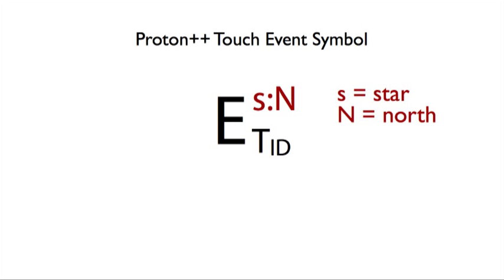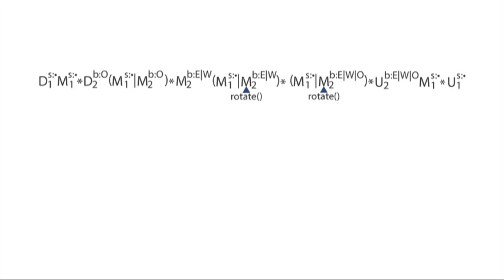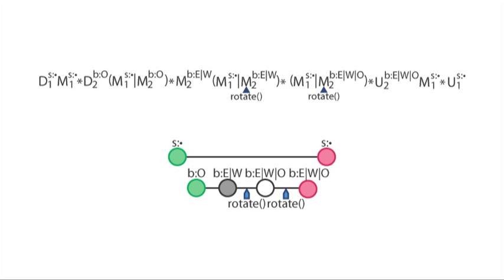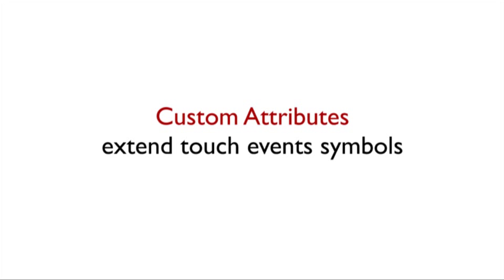For example, S colon N represents the touch hitting a star target while moving north. In addition to specifying gestures as regular expressions, developers can specify gestures via gesture tablatures, a graphical notation.